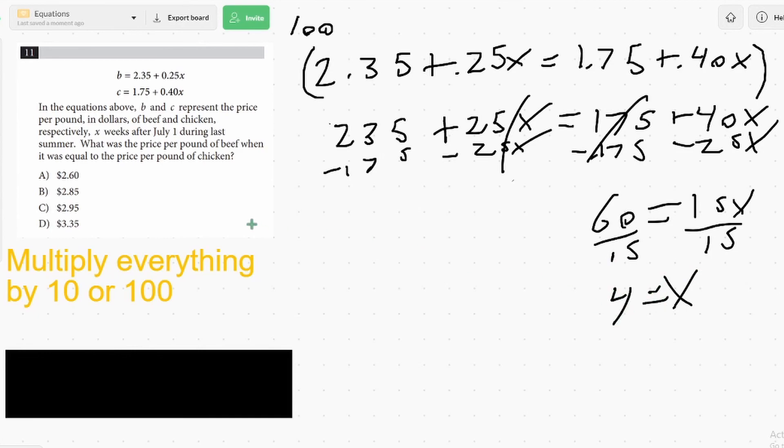And the question is looking for the price of beef. So we'll plug the X equals 4 here. 0.25 times 4 is 1 plus 2.35. And we get our answer as D.